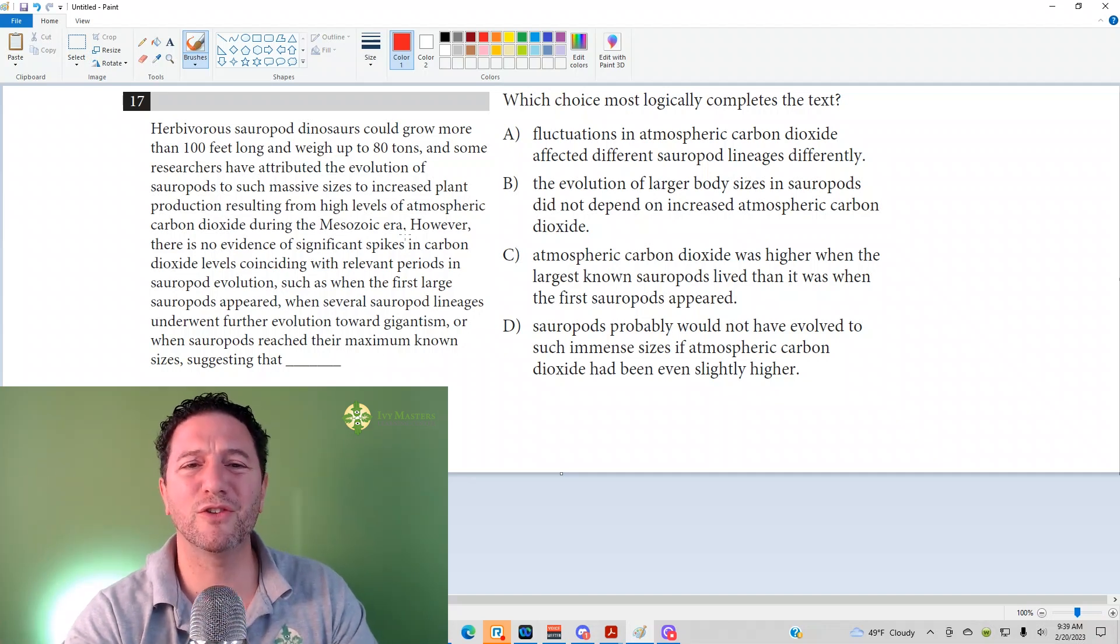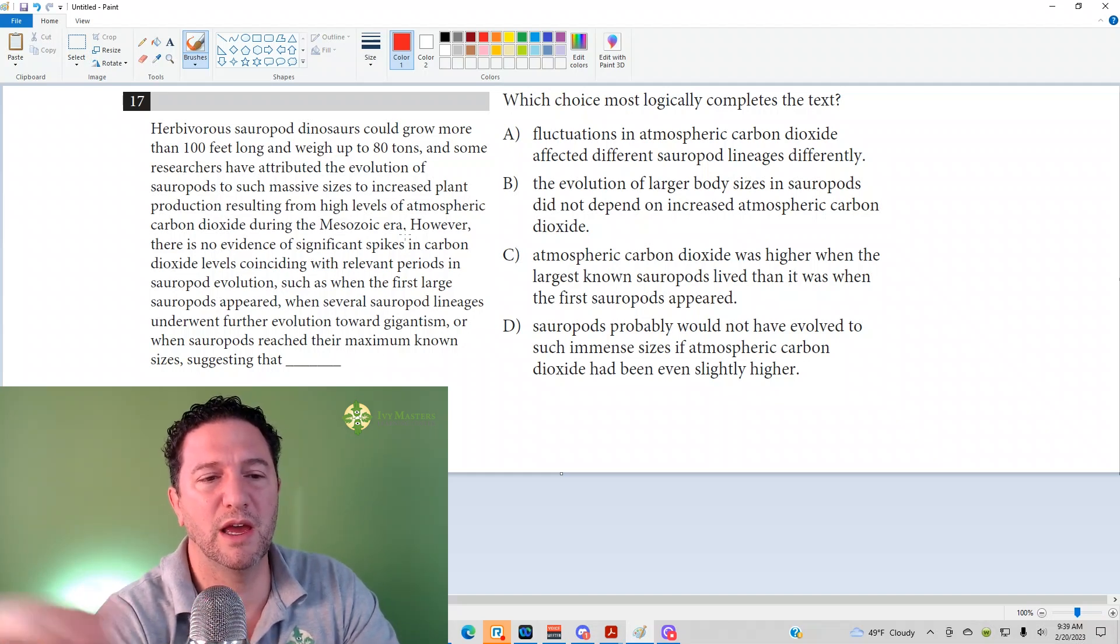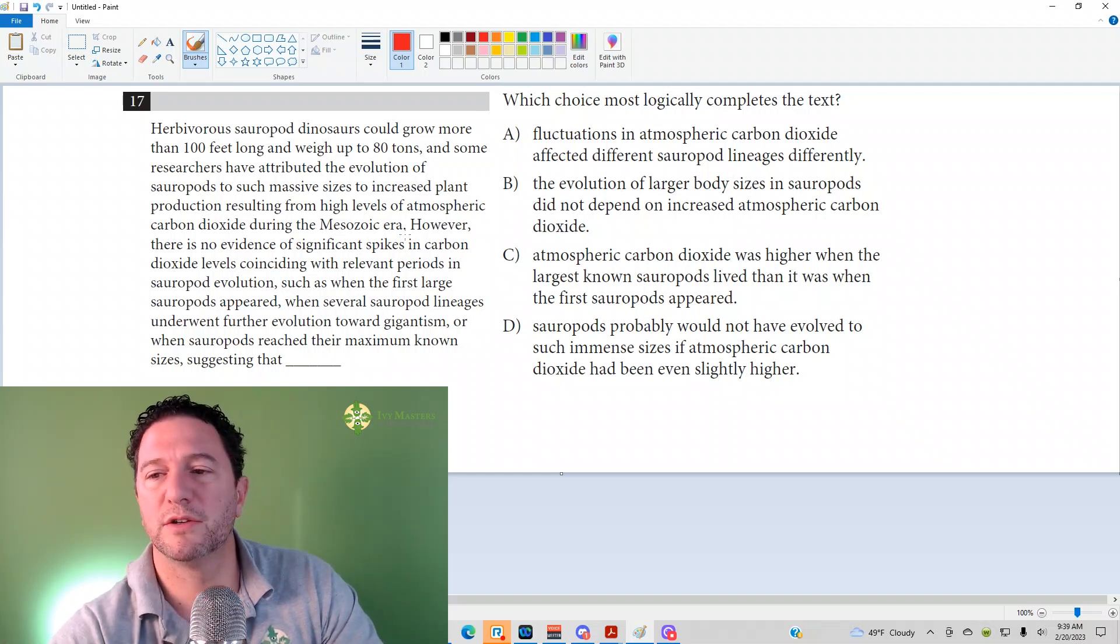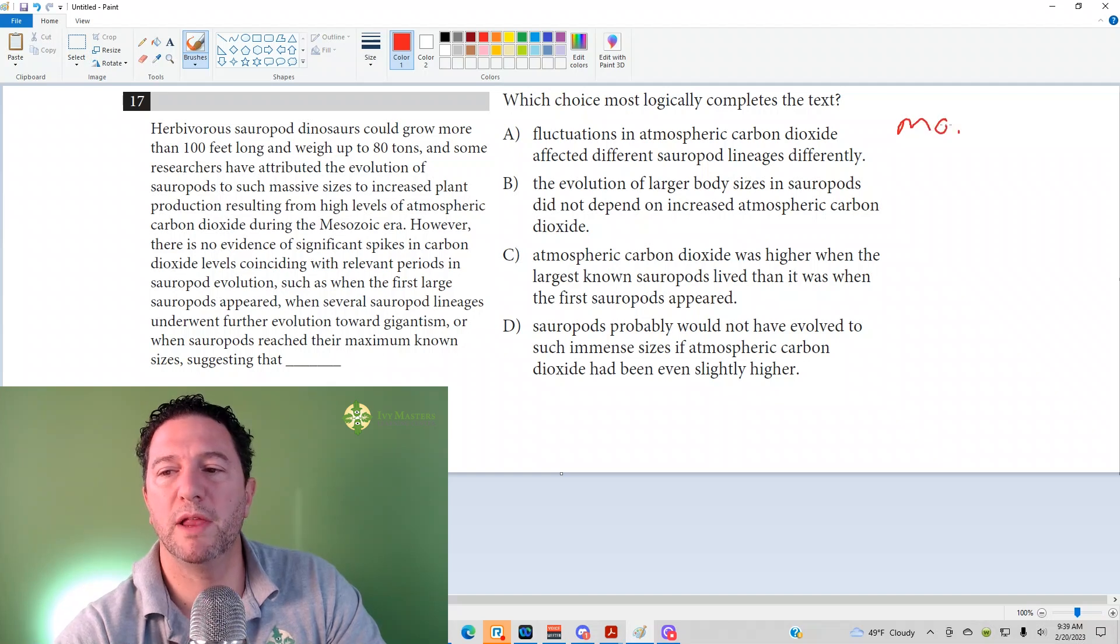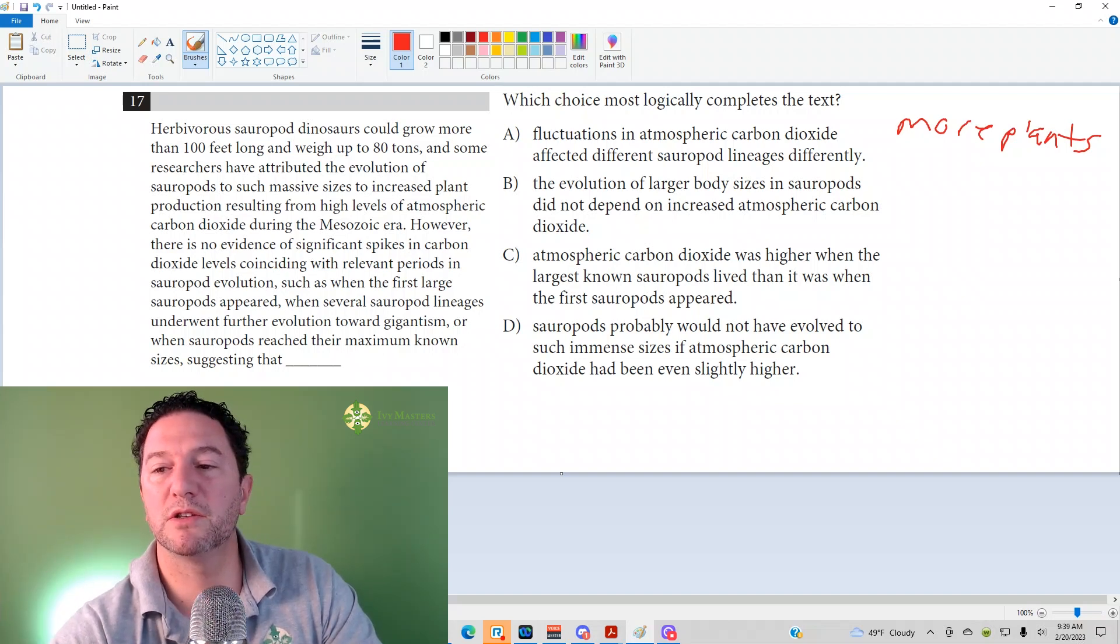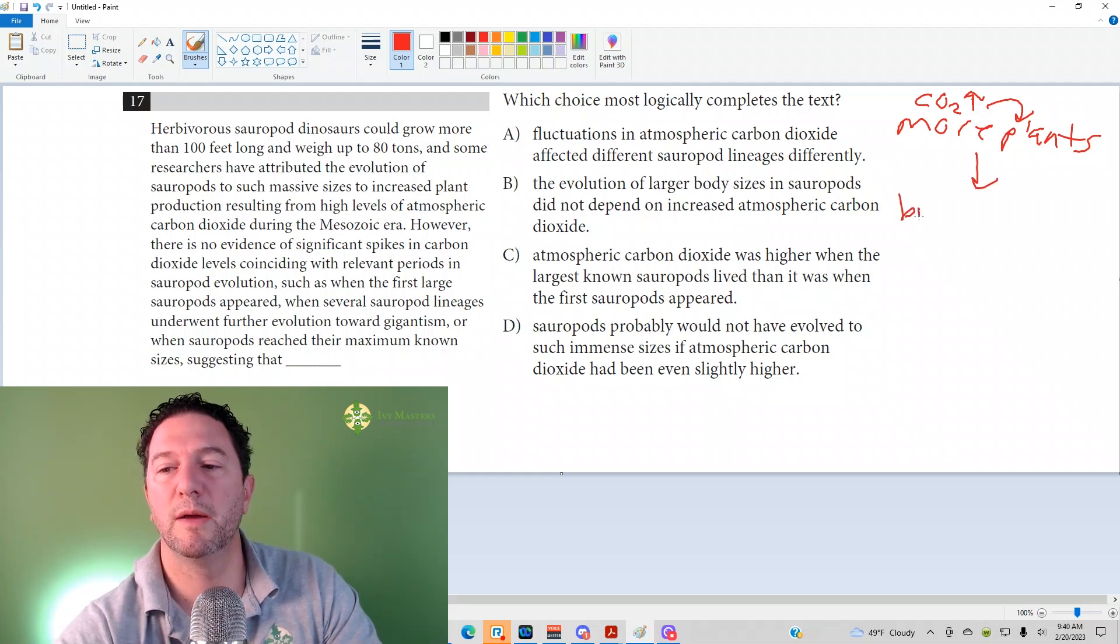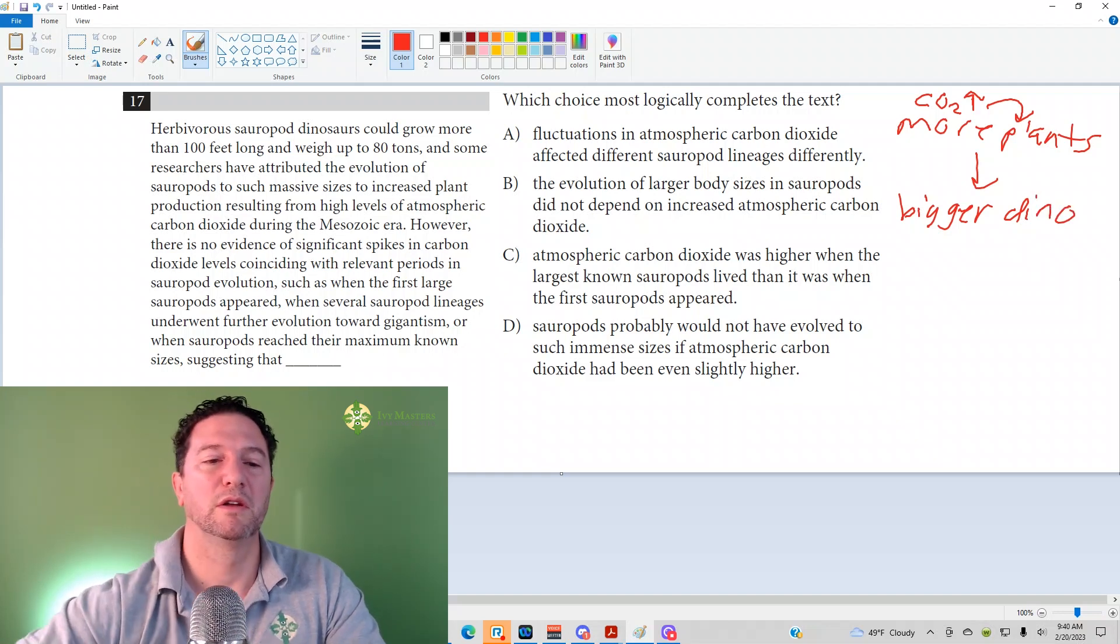So first of all, these things are huge: 100 feet long, 80 tons. Now notice what it says, that it's more plants. That's why they've gotten so big. But it's because of higher CO2 carbon dioxide levels. So CO2 is up, which leads to more plants, which leads to bigger dinosaur.